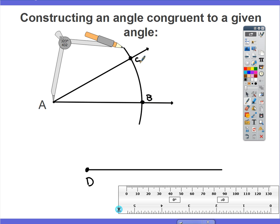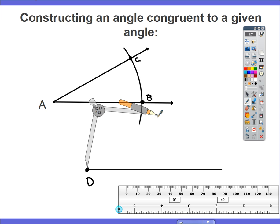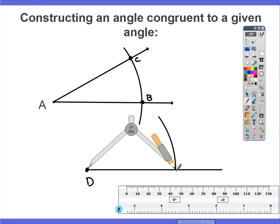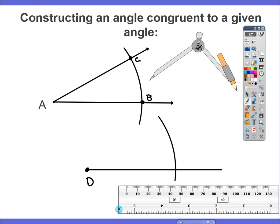Without changing the span of that compass, we're going to place our compass down on point D. And I'm going to go ahead and create that same style arc, that same width. Obviously, we can see that our segment and that arc have intersected each other. So I'm going to go ahead and label that point E.